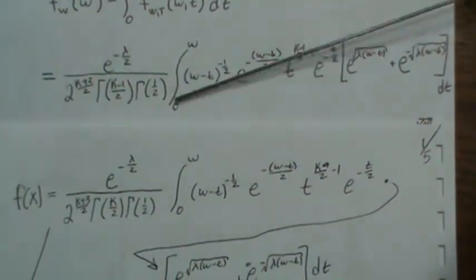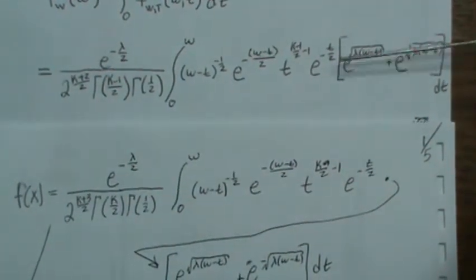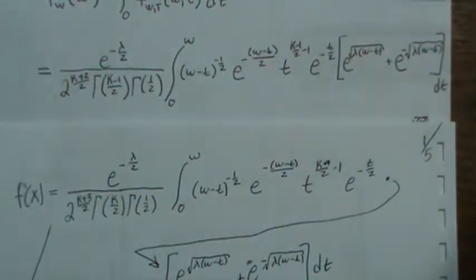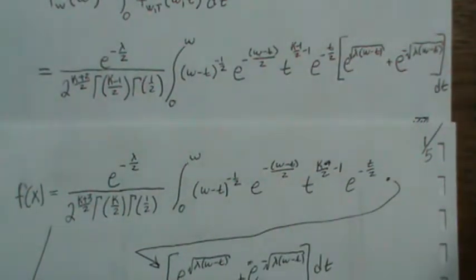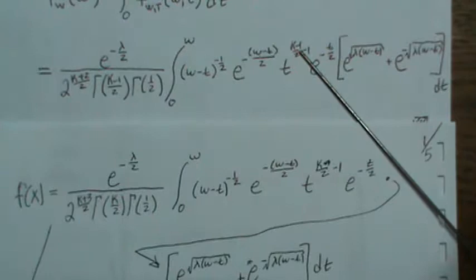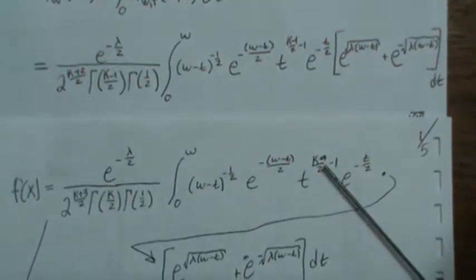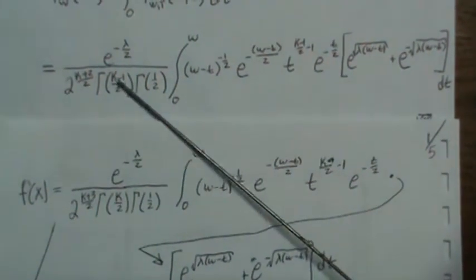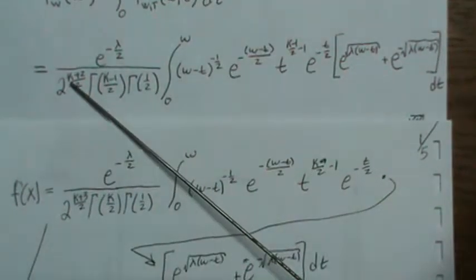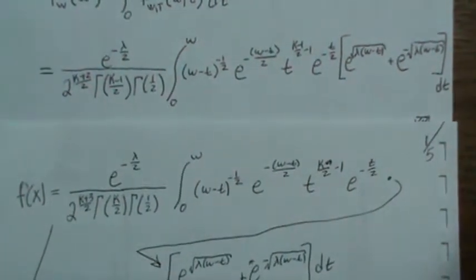So this density instead of k minus 1 degrees of freedom I write it as k degrees of freedom. So wherever there's a k minus 1 I write it as a k, so k minus 1 is k, k here changes to k plus 3.